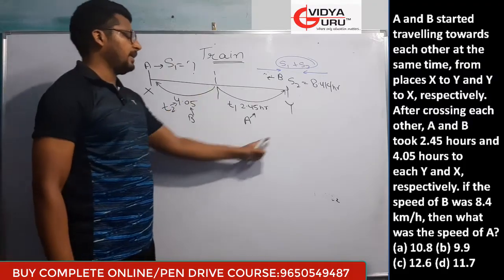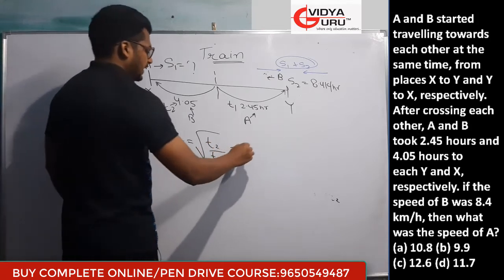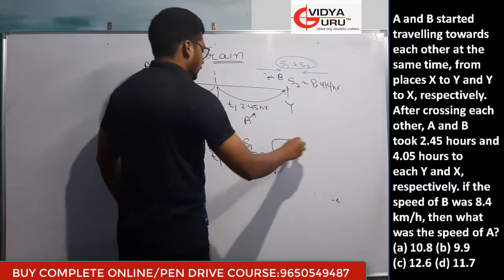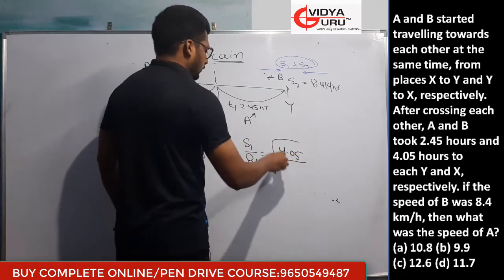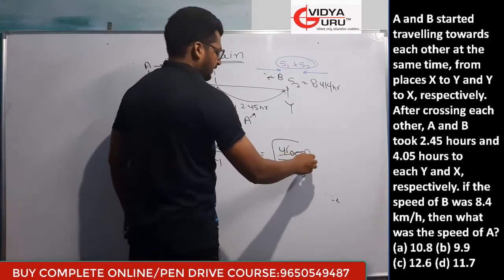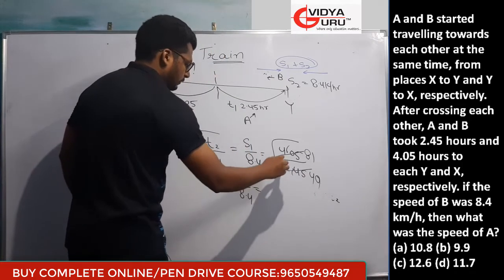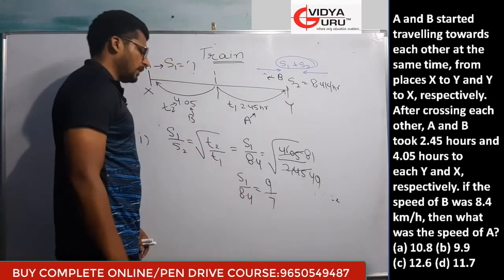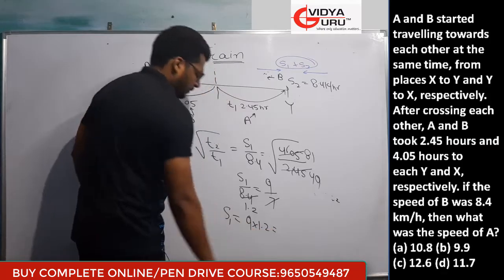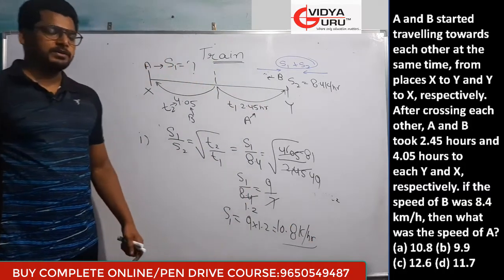Simplifying 4.05/2.45: canceling decimals gives 405/245 = 81/49. So √(81/49) = 9/7. Therefore s1/8.4 = 9/7, which gives s1 = 8.4 × 9/7 = 1.2 × 9 = 10.8 km/h. The speed of A is 10.8 km/h.